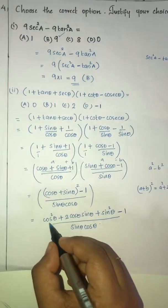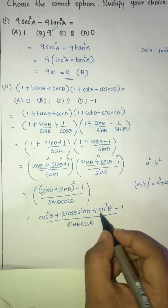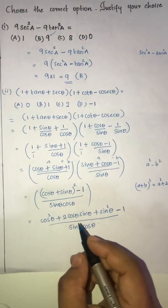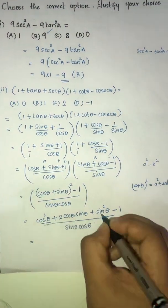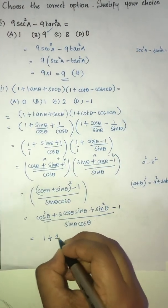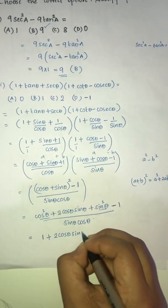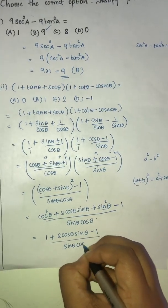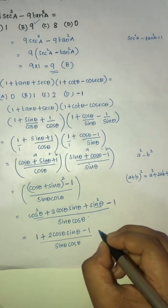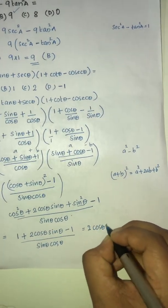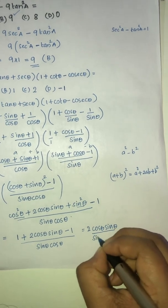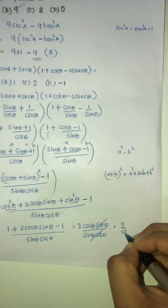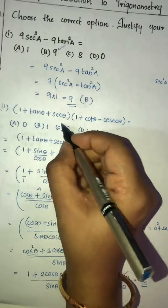We know that cos²θ + sin²θ = 1, so we have 1 + 2cosθsinθ - 1, divided by sinθcosθ. The 1 and -1 cancel, leaving 2cosθsinθ divided by sinθcosθ. We can cancel sinθcosθ, giving 2. So the answer is 2 and the correct option C is correct.